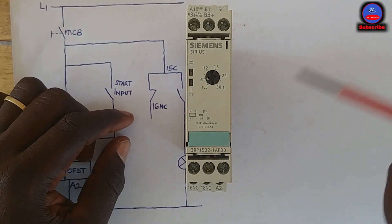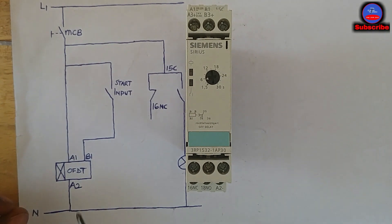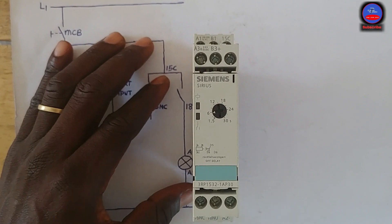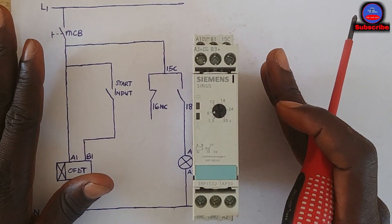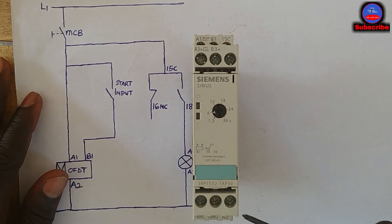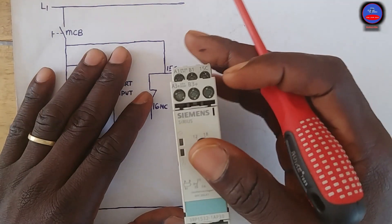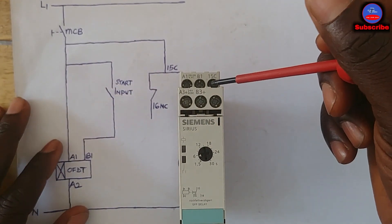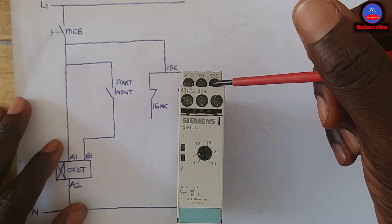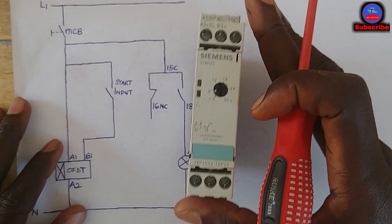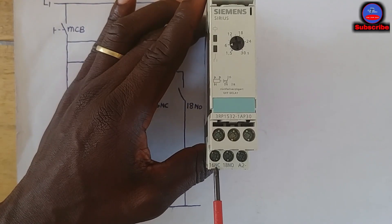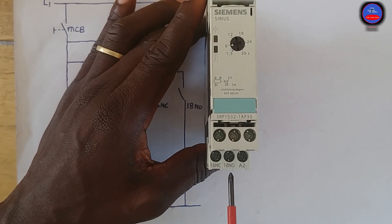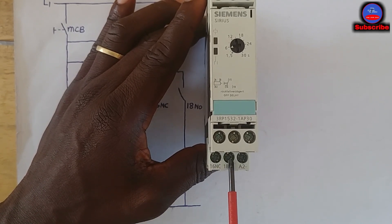For AC, the coil terminals are A1 and A2. Since we are using this timer on AC, we are going to use A1 and A2. For the contact terminals: 15C is the common terminal, 16NC is the normally closed terminal, and 18NO is the normally open terminal.